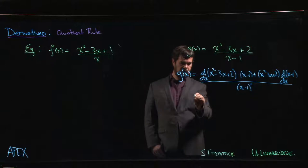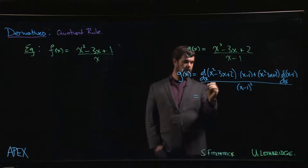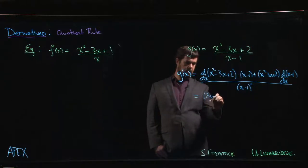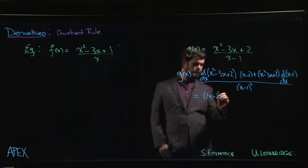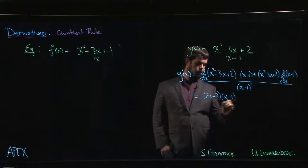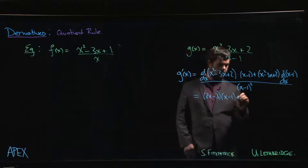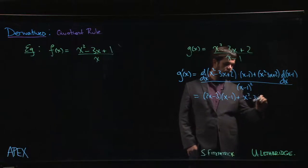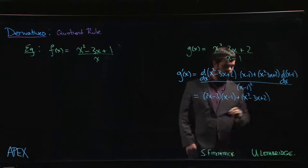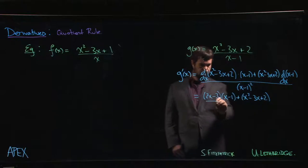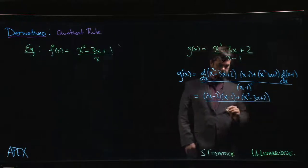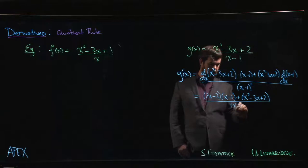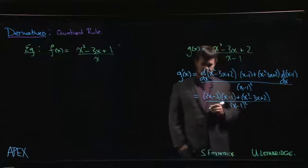And now we carry out those derivatives and we get our answer. So here we have 2x minus 3 times x minus 1. Then we have x squared minus 3x plus 2. Derivative of x minus 1 is just 1, so we leave it at that.